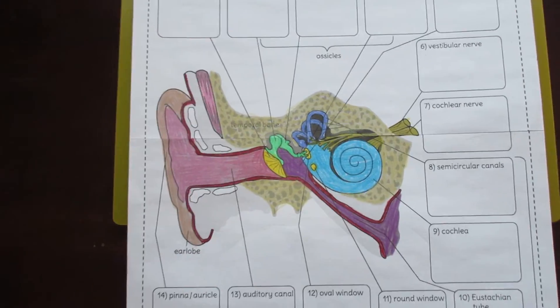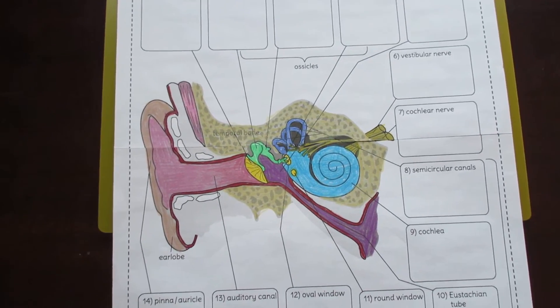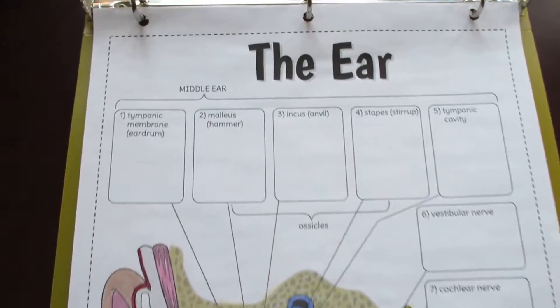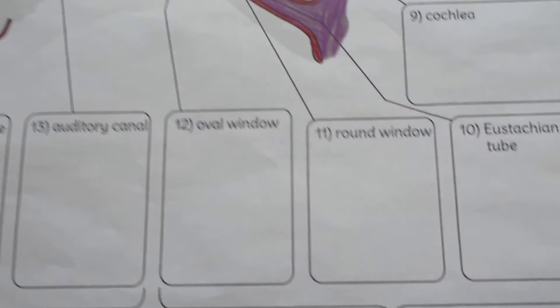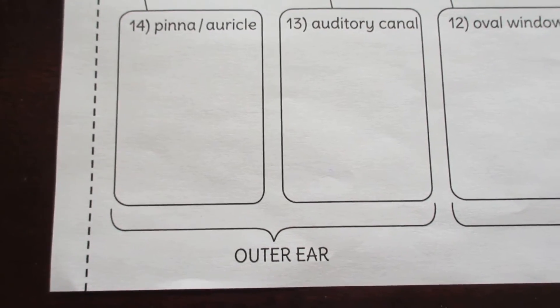Now this diagram is large and perfect for coloring if that's what you choose to have your students do. I've also organized the parts into middle ear, inner ear, and outer ear to aid in organization.